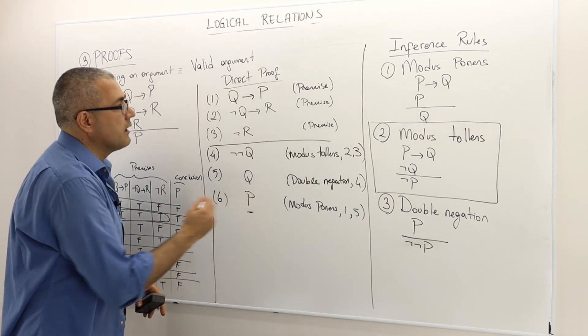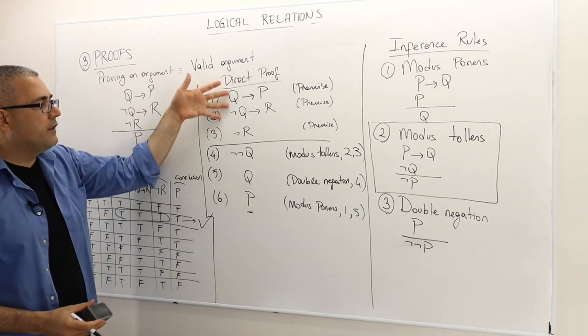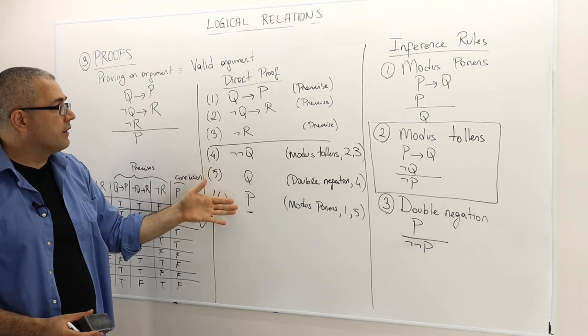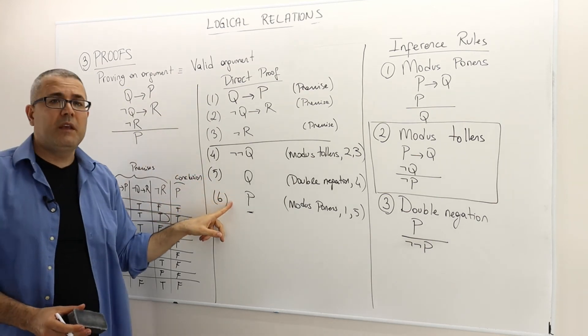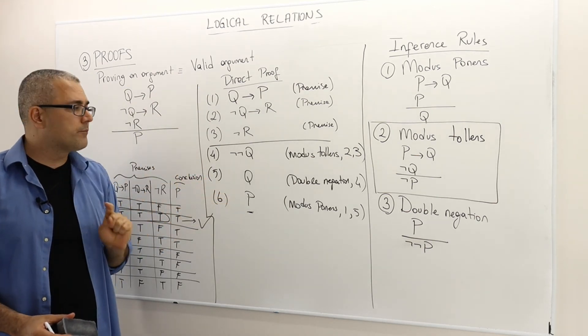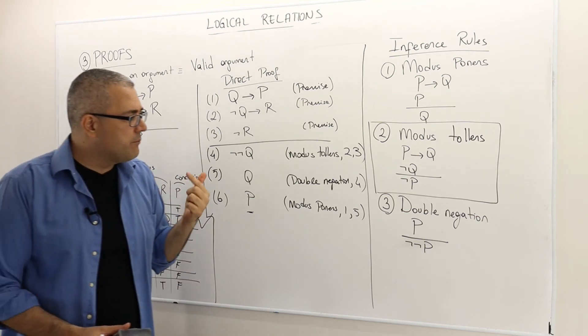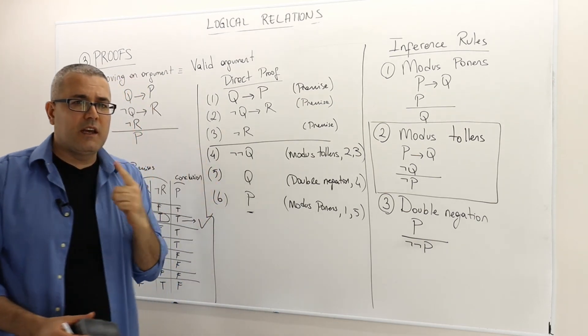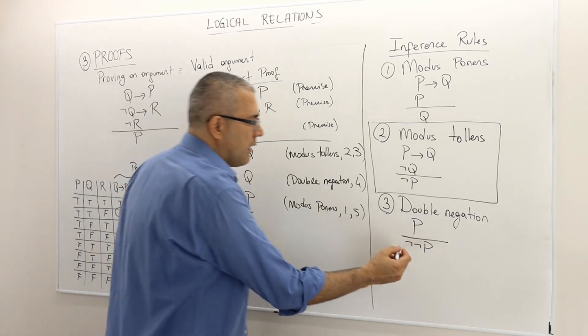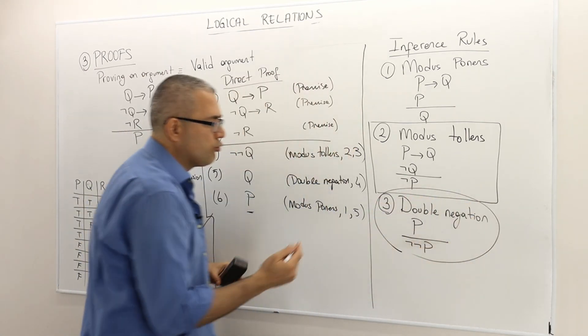So that's it. The conclusion is shown. So if these premises are true, then the conclusion, which is P must be true as well.